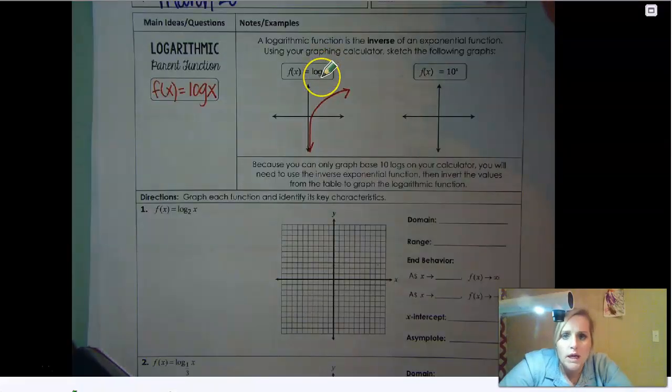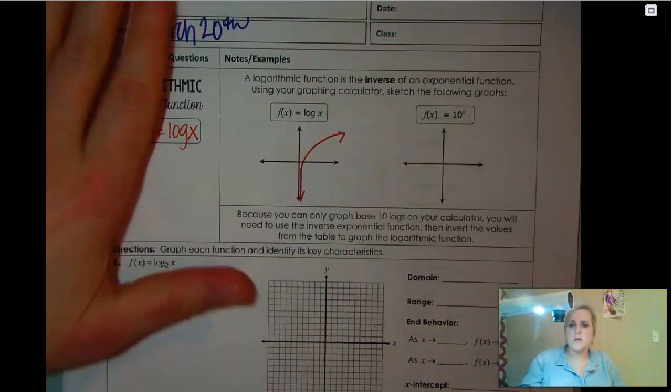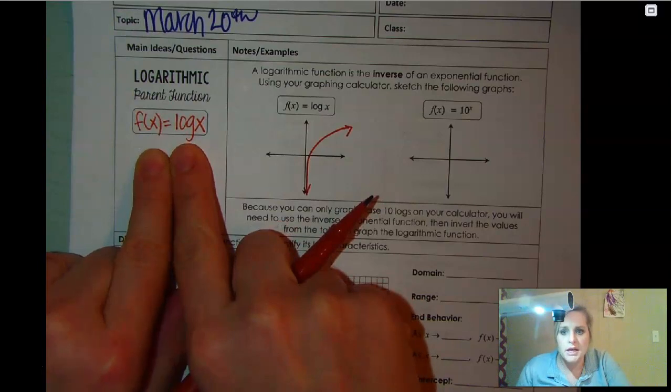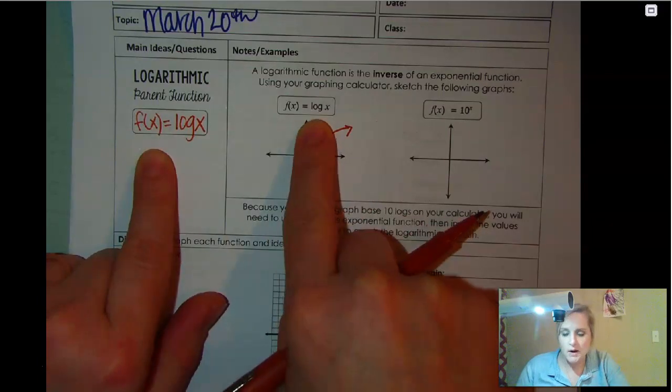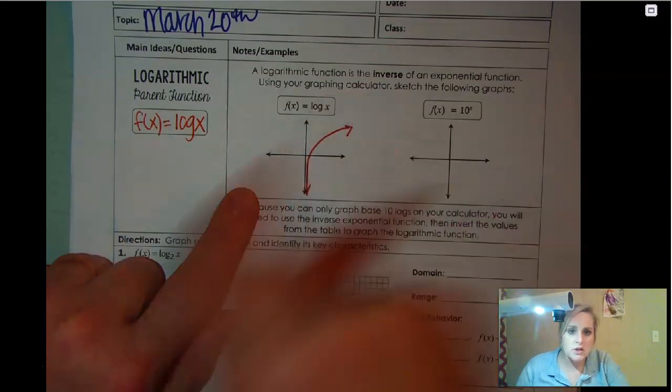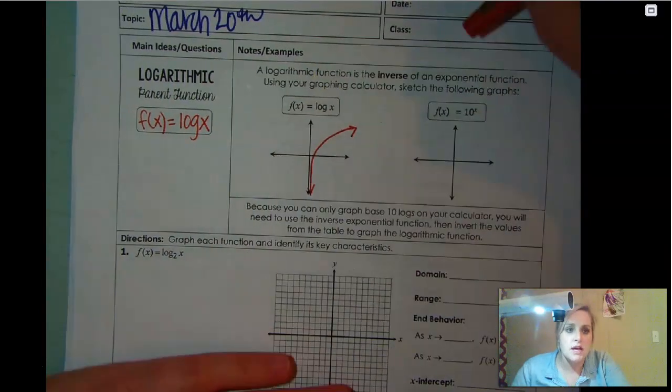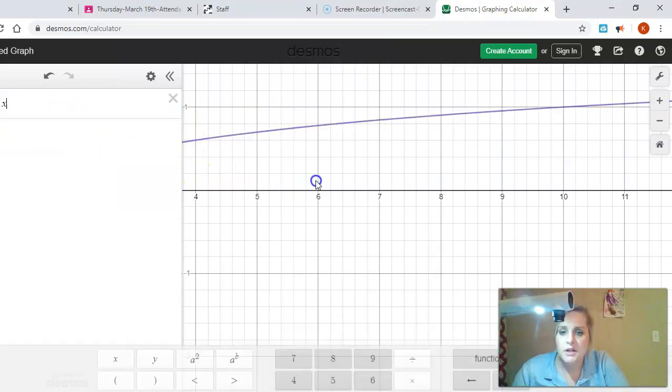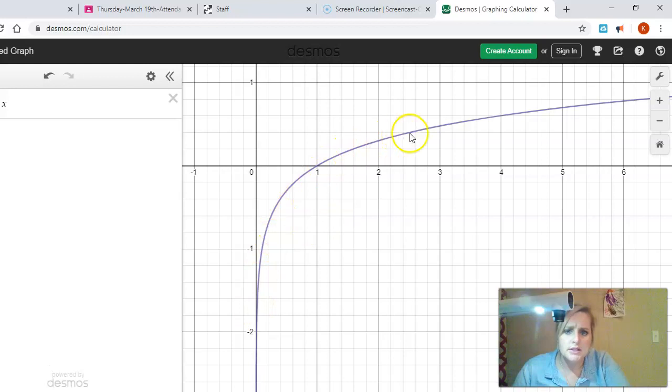Alright, so we are working on graphing logs. If you look at what we've talked about, our parent function is f of x equals log x. Now, if you hate f of x, remember you can always let that be y. That's how you'll see it like right here. This is our parent function. So they wanted you to use a graphing calculator to sketch this out. You can see the first one that I have entered in here is my log function. It's just y equals log x. You can see that graph right there.